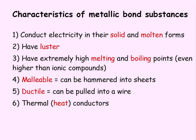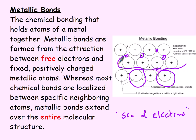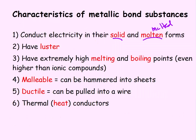Metallic bonds conduct electricity in their solid and molten forms because those electrons can move carrying electric charge. They have luster, meaning they're shiny. They have extremely high melting and boiling points — generally even higher than ionic. They're malleable, meaning they can be hammered into sheets. They're ductile, meaning they can be pulled into wires. And they're thermal conductors — heat and electricity both — because the electrons can move from one side to the other.